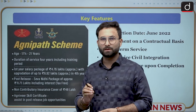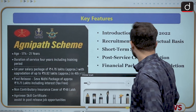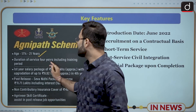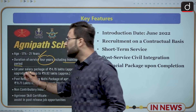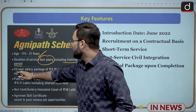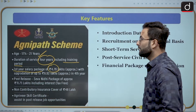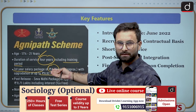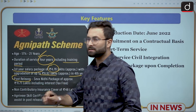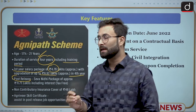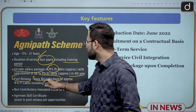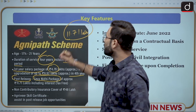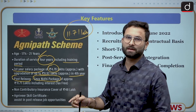Coming to the key features: recruitment is for persons aged 17.5 to 21 years, with a duration of service of 4 years including the training period. The first-year salary package will be around 4.76 lakhs, with upgradation up to 6.92 lakhs in the 4th year. Post-release, upon fulfilling the contract, Agniveers will receive a Seva Nidhi package of nearly 11.71 lakh rupees.